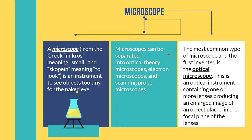Microscopes can be separated into different types: the optical microscope, electron microscope, and scanning probe microscope. In the optical microscope, we use our eyes to view the specimen. In the electron microscope, we use big computers and see the action of electrons bouncing off the surface to create the image. In the scanning probe microscope, we scan the surface of the specimen. Each type creates different images and different preparations are needed.